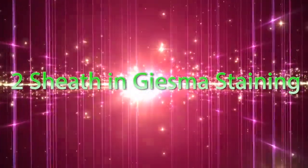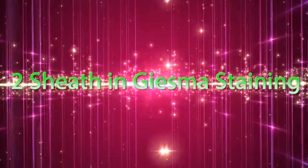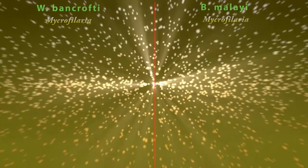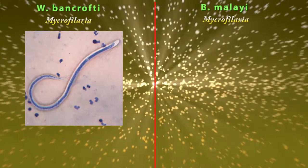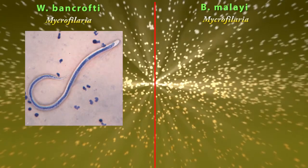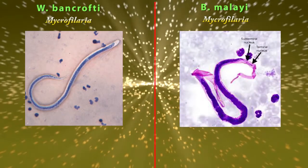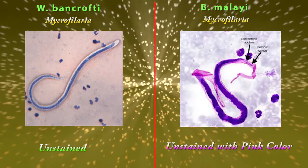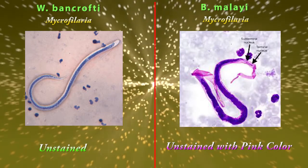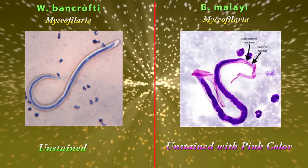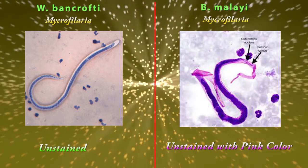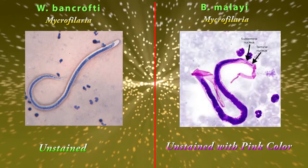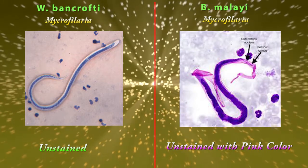Difference number two: sheath in Giemsa stain. Wuchereria bancrofti sheath is unstained, but Brugia malayi sheath is stained in pink color. This is a really good clue to differentiate Brugia malayi from Wuchereria bancrofti.